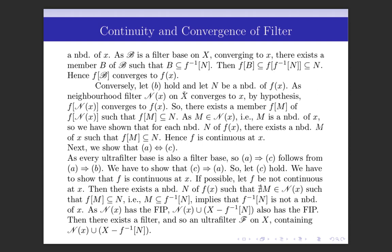Conversely, let B hold. Then we have to prove that F is continuous at x. That means we have to prove that for every neighbourhood N of F(x), there exists some neighbourhood M of x such that F(M) is contained in N — that is the condition for continuity at x. So let N be a neighbourhood of F(x).